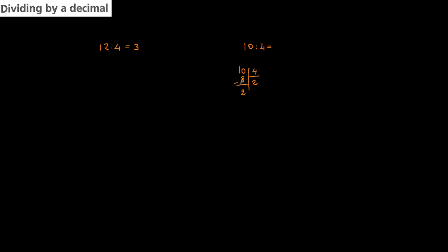Now, 2 is not divisible by 4. If you want to continue the operation with a decimal number, you add a zero here and at the same time you add the decimal point — and we do this only once. Now the number is 20. In 20 there are 5 fours: 5 times 4 equals 20. We get remainder 0, so the operation is finished. 10 divided by 4 equals 2.5.